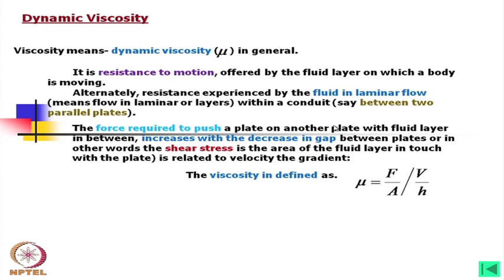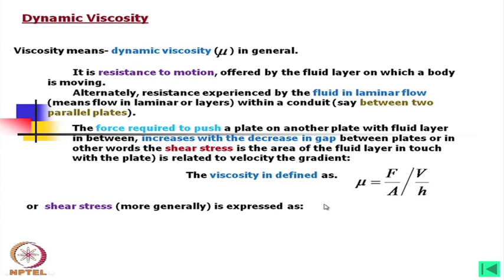Viscosity is defined as μ = (F/A) / (V/H), where F is the force, A is the area, V is the velocity, and H is the gap. For shear stress, more generally it is expressed as τ = F/A = μ (du/dy).